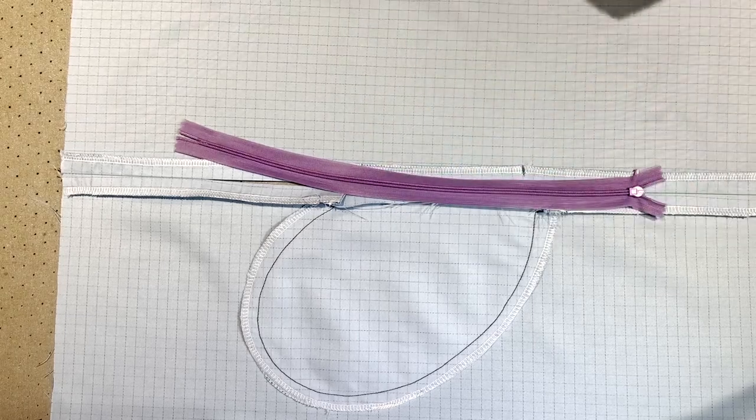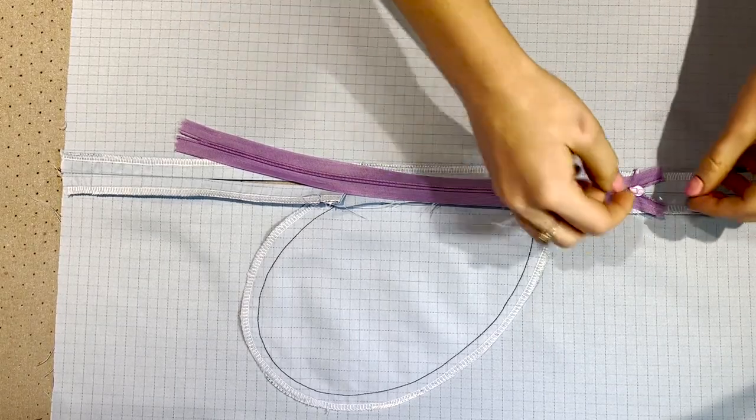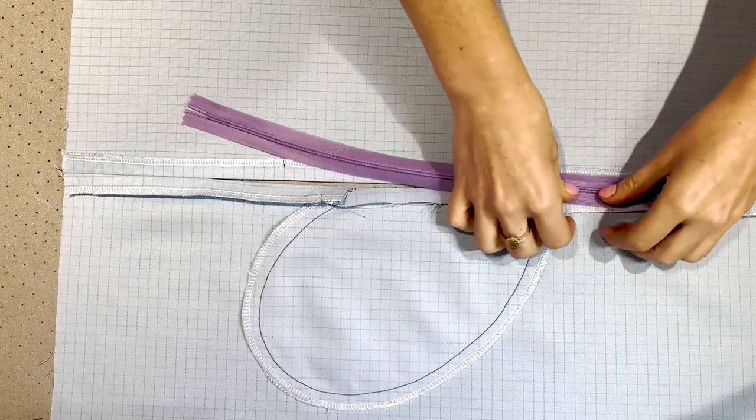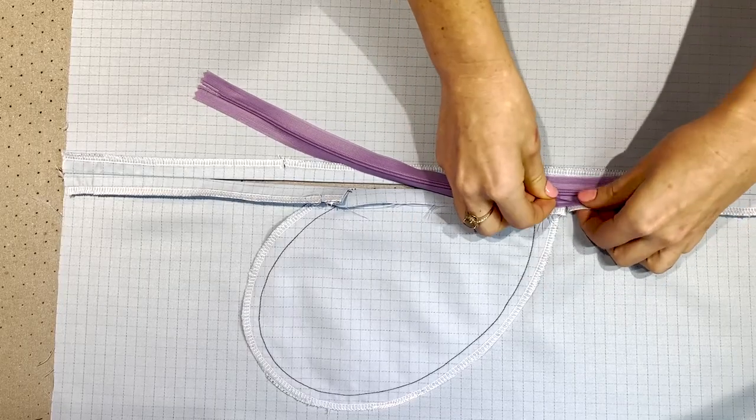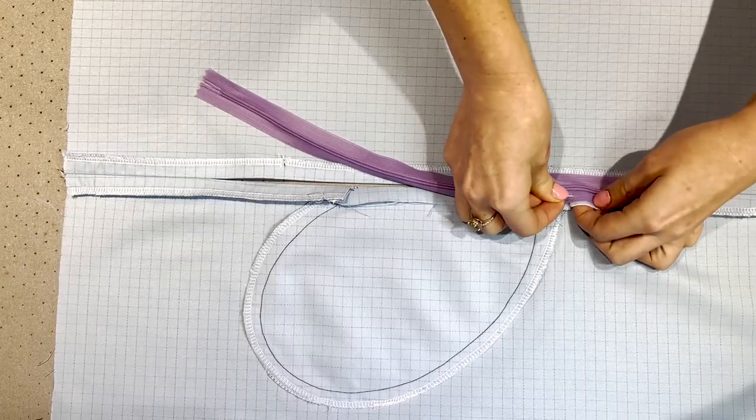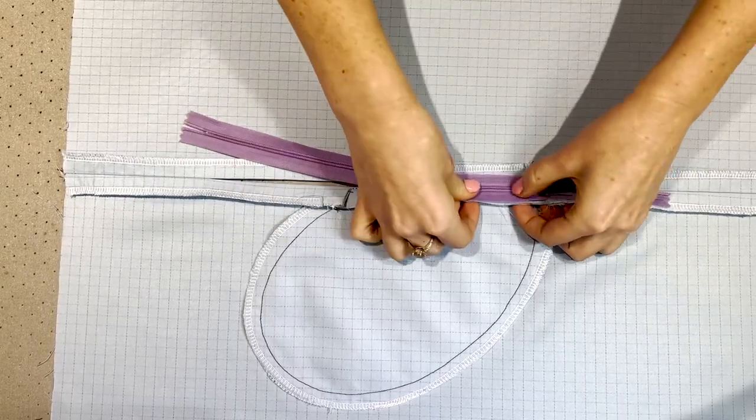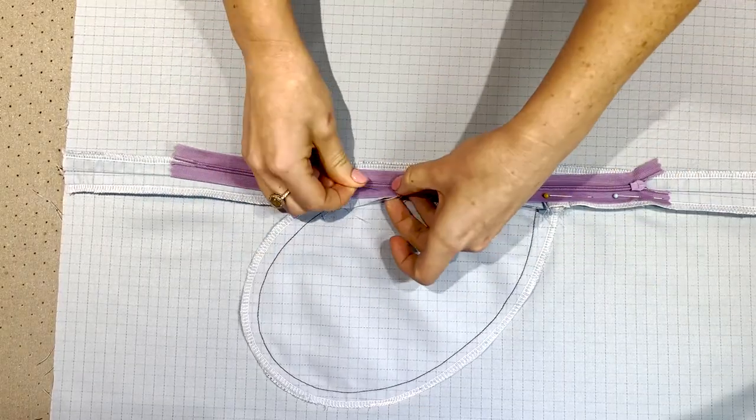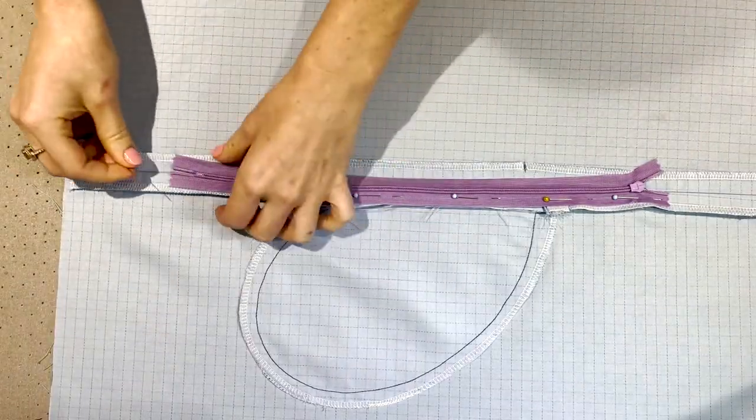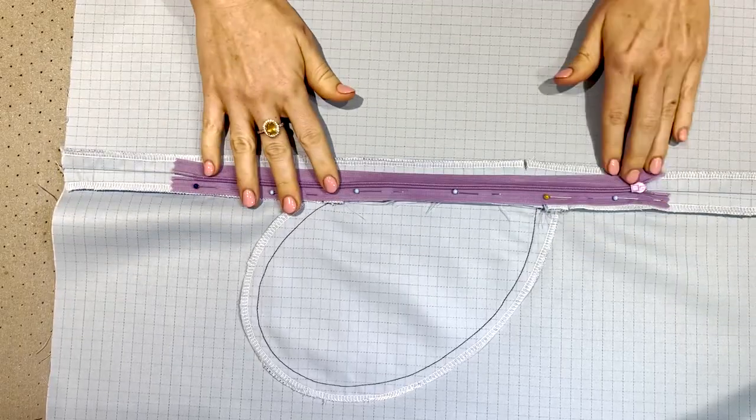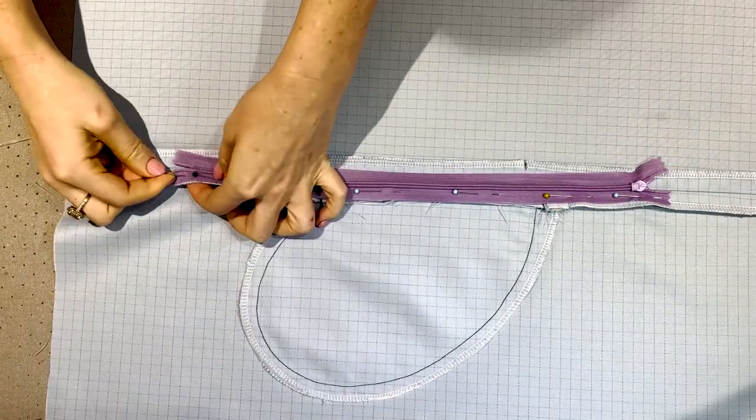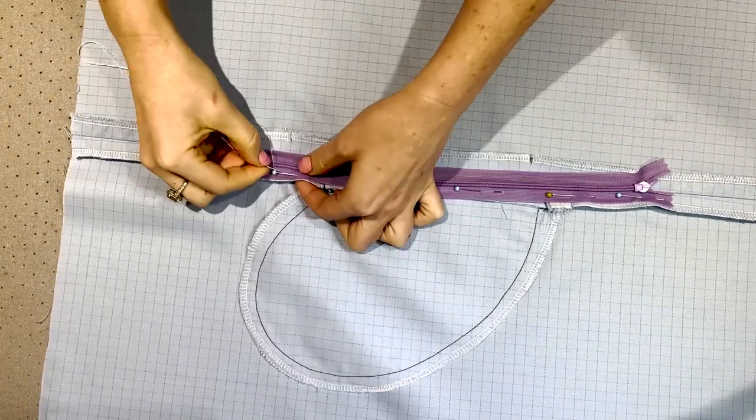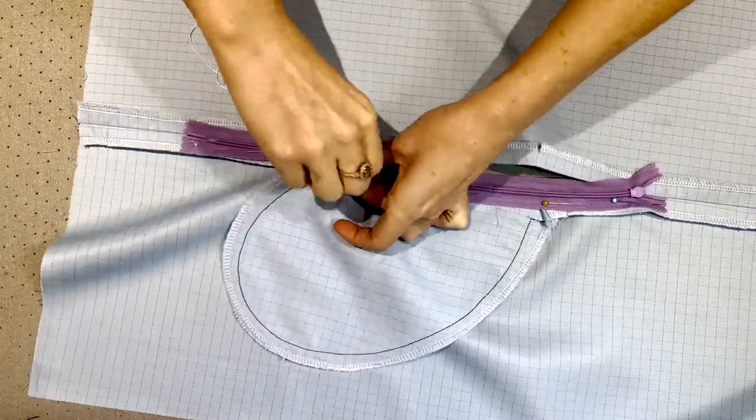Place your zipper in the gap and pin. I like to pin down one side first, usually the pocket side as this is the trickier side, and align the teeth with the central seam line. Make sure you don't catch any of the front face of the fabric or the pocket. Then hand baste the zipper into place.